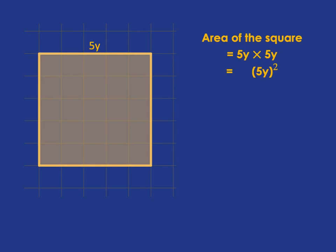The area of the square is given by taking the length of the side and multiplying it by itself. So it's 5y multiplied by 5y, which we can write as 5y squared. We take the 5 and multiply it by the 5, giving us 25, and then we take y multiplied by y, giving us y squared. So the area of this square is 25y squared.